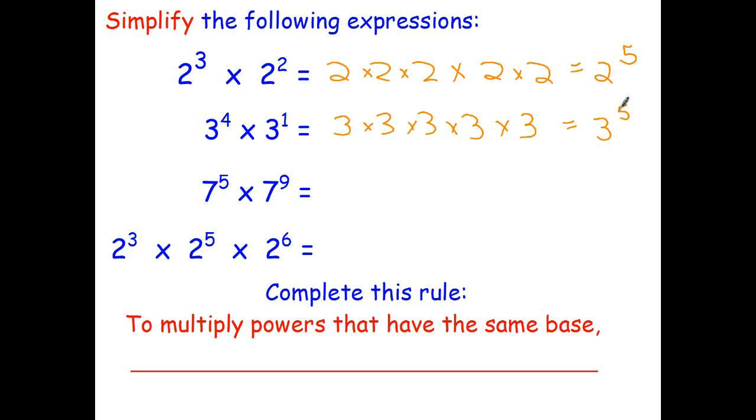And again if I want to write that in index form it's just 3 to the power of 5. Now hopefully you can see a pattern in these two answers. Even though I'm multiplying, in order to multiply 2 to the power of 3 times 2 to the power of 2, 3 and 2 gives me 5. I have to add the powers and not multiply them.